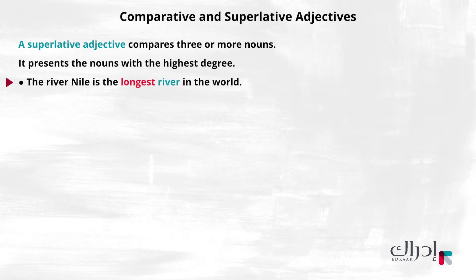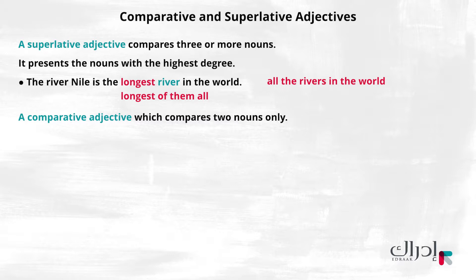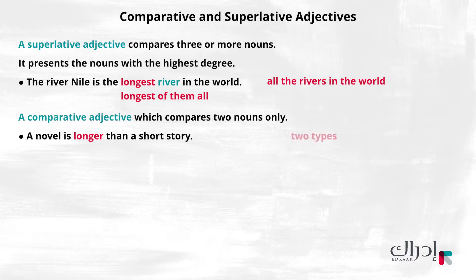For example, the river Nile is the longest river in the world — it compares all the rivers in the world and tells that the river Nile is the longest of them all. It's different from a comparative adjective, which compares two nouns only. For example, a novel is longer than a short story, comparing two types of stories and showing which one is longer.